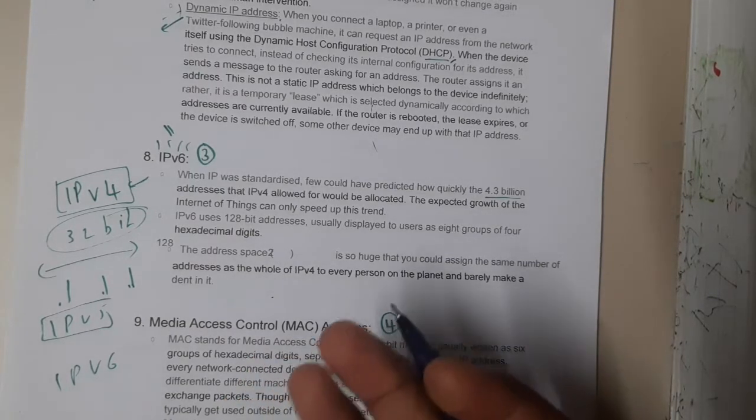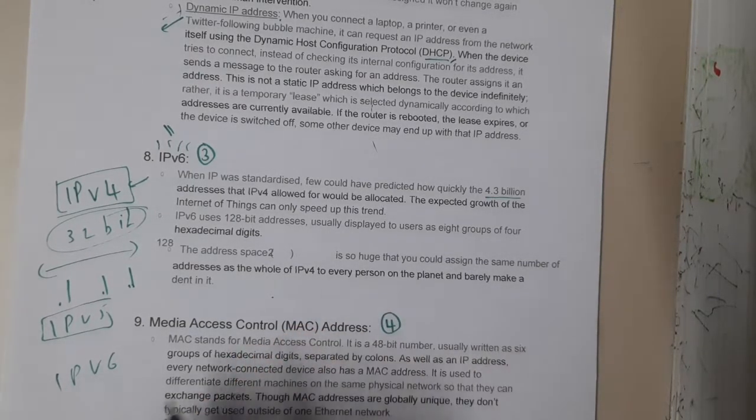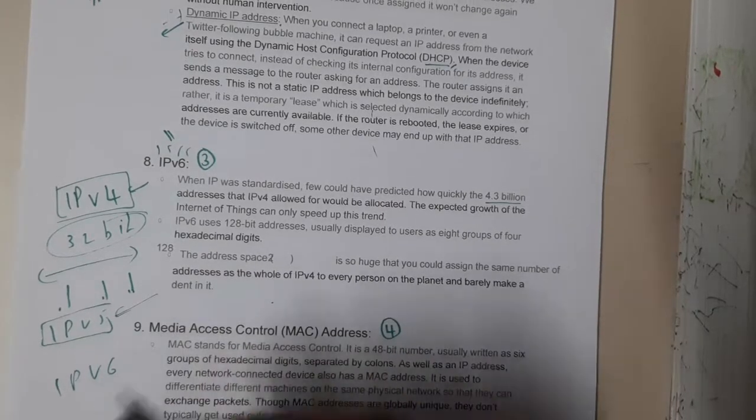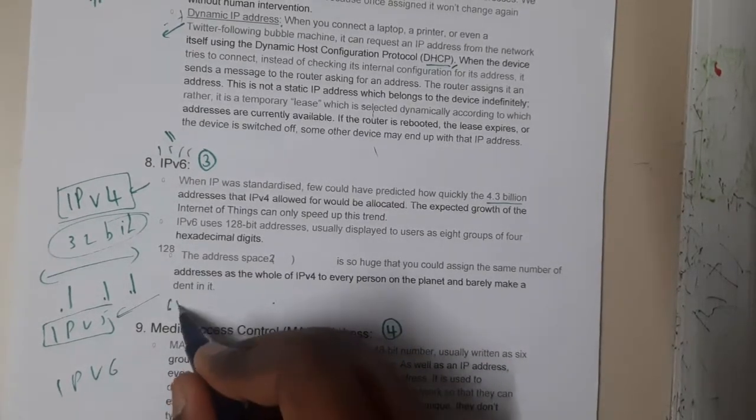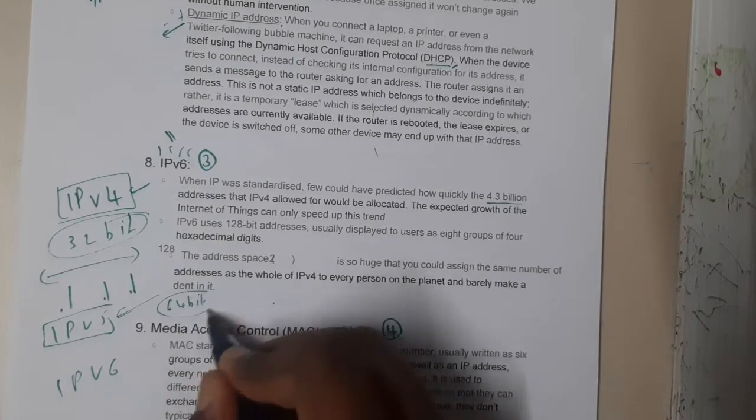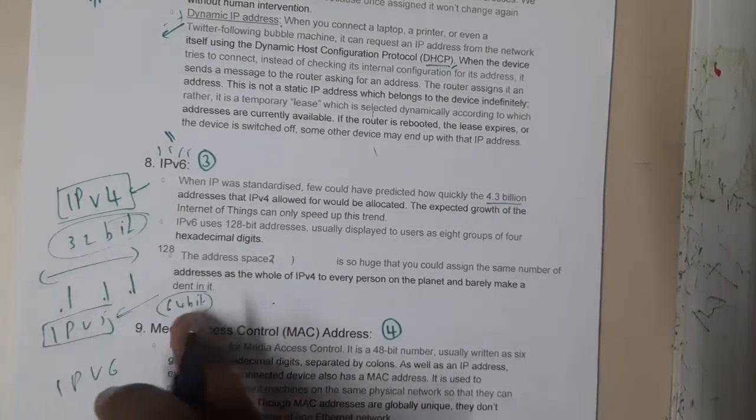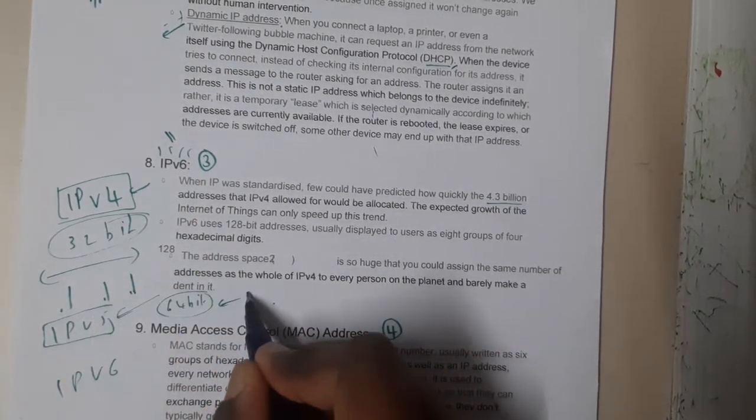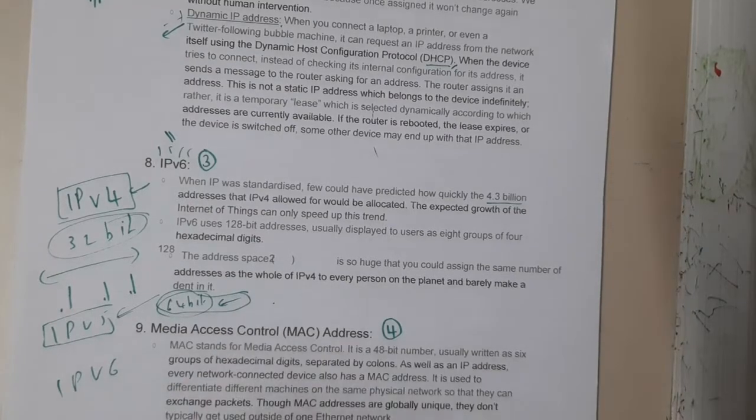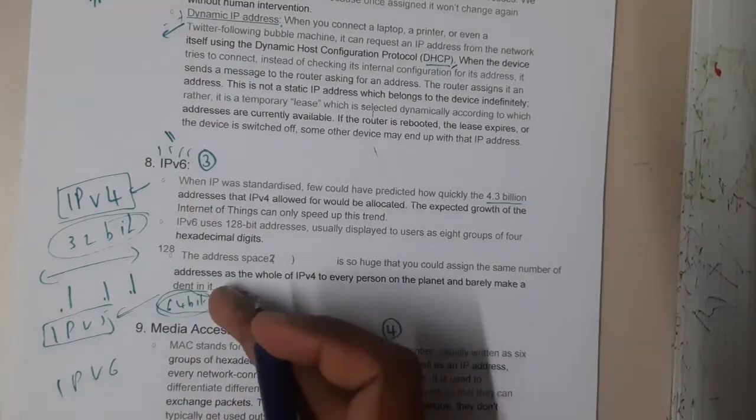That is the reason why they started to migrate to some other thing. They even analyzed IP version 5 which should be of 64 bits, basically it will double. Even this could be fulfilled within few years.